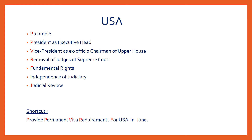The features borrowed from the constitution of USA are: preamble, president as executive head, vice president as ex-officio chairman of the upper house, removal of judges of the supreme court, fundamental rights, independence of judiciary, and judicial review.